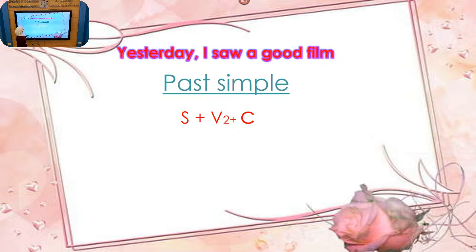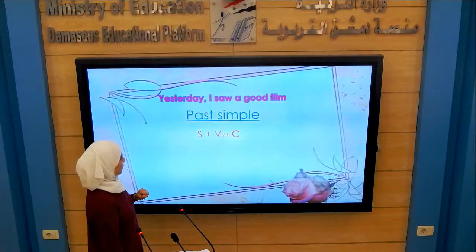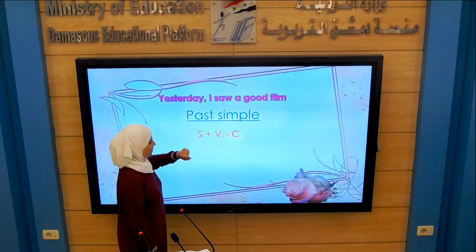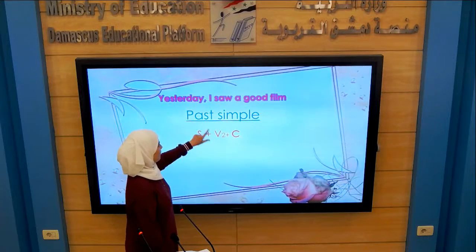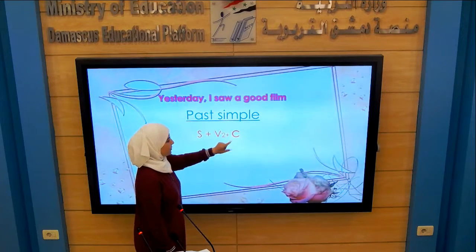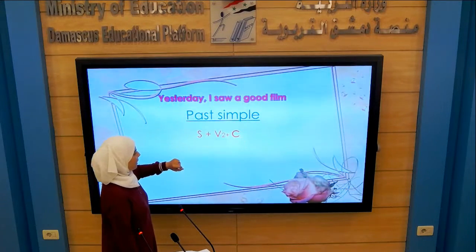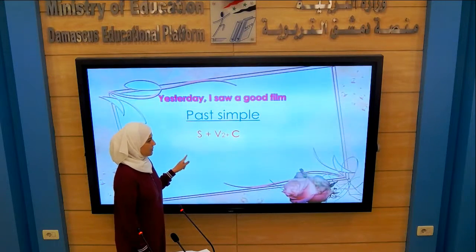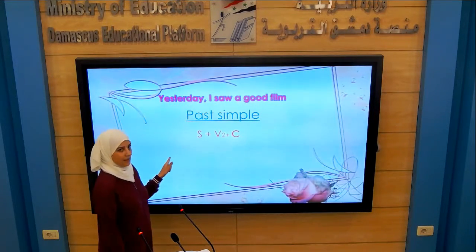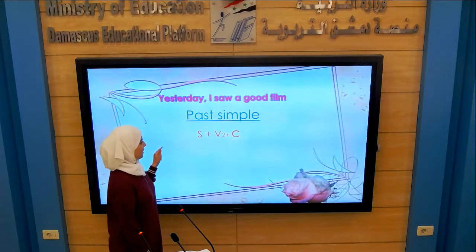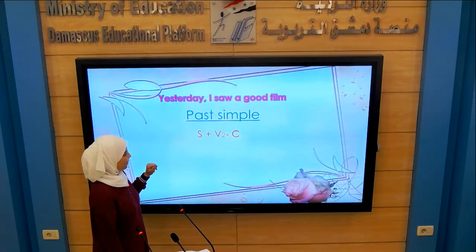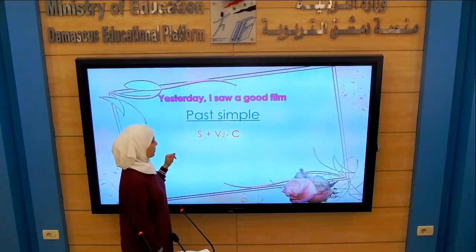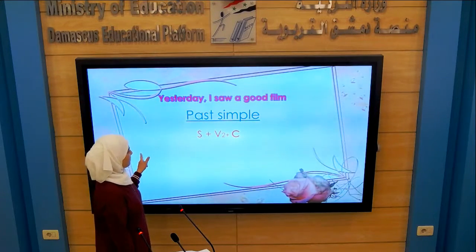What is the form of Past Simple? We start the sentence with the subject, then we use verb two with Past Simple, then complement or rest of the sentence. We have two kinds of verb two: either regular verbs ending with -ed, like 'play/played' and 'live/lived', or irregular verbs like 'drink/drunk', 'go', 'see', and 'swim/swam'.